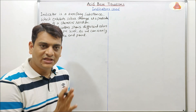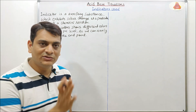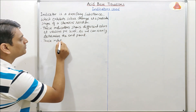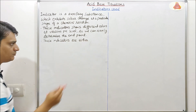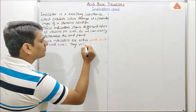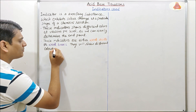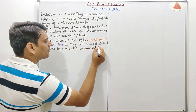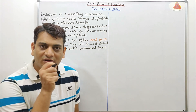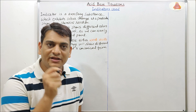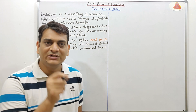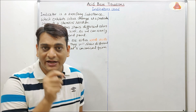Chemically, these indicators are either weak acids or weak bases, and they will show different colors in ionized and unionized forms. These indicators are used in the form of dilute solutions, and for an acid-base titration, we will select the indicator according to the equivalence point — meaning we will select those indicators which will show distinct color change at the equivalence point.